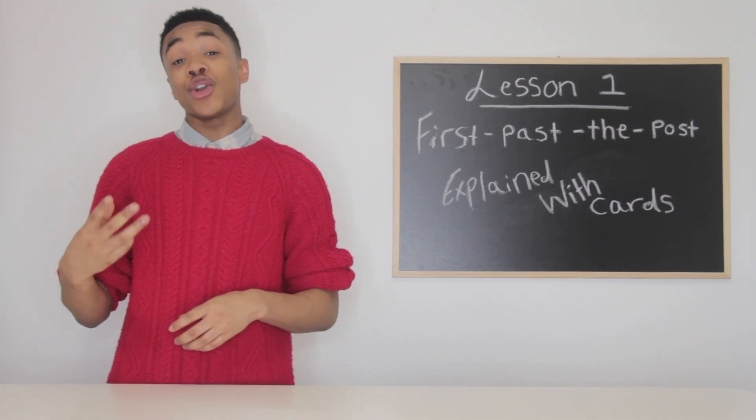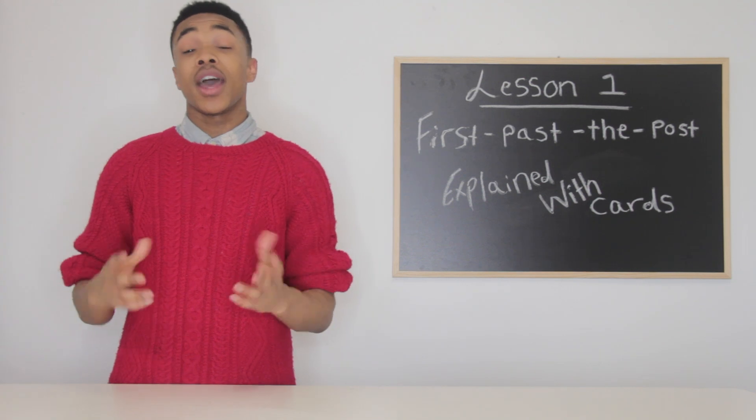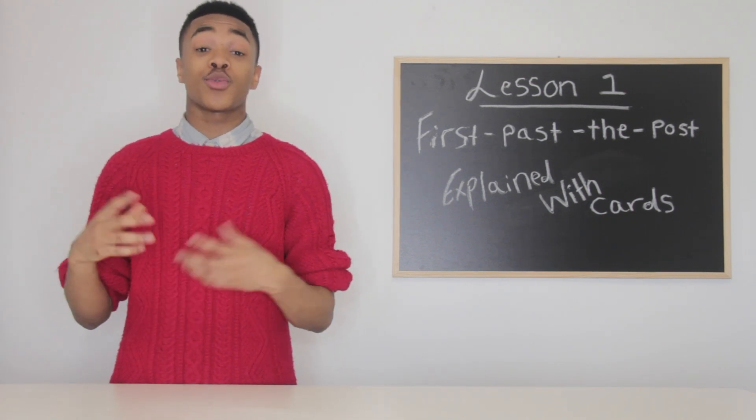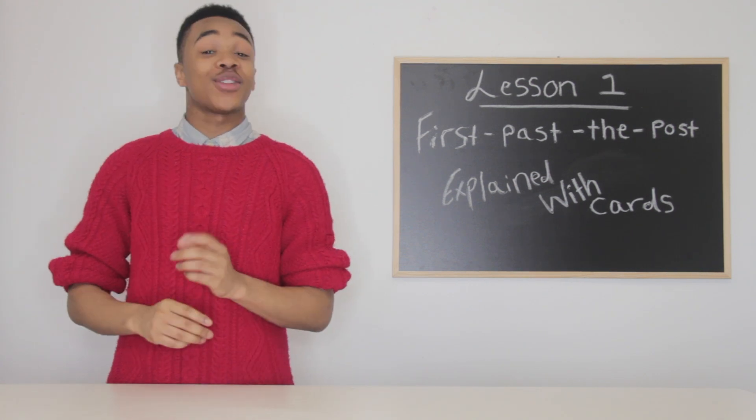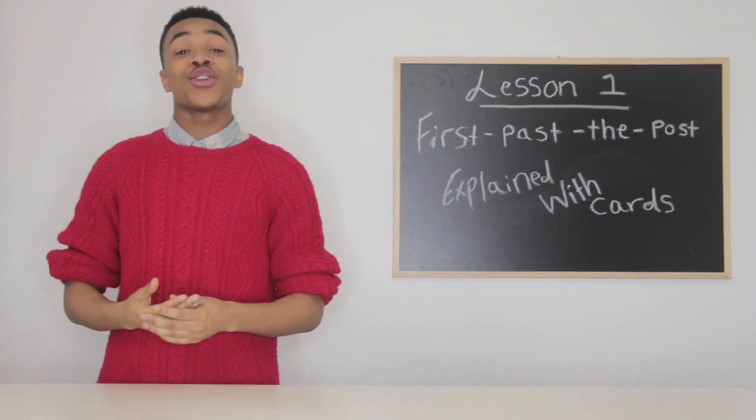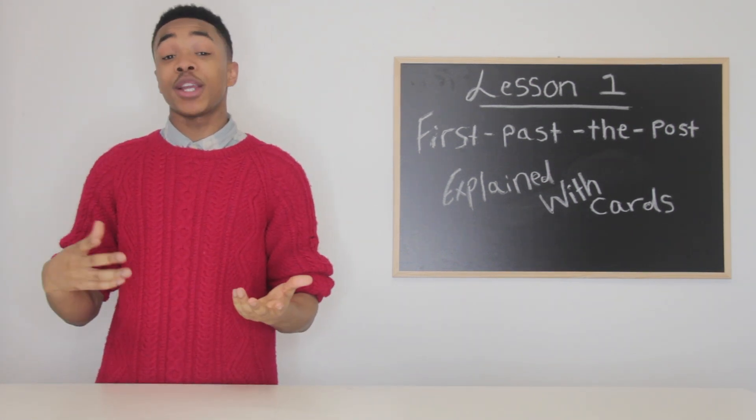There are three main voting systems that we use in the UK. The main one being first past the post, which we use to elect our government. And let me tell you something, I'm learning a lot about this today. So now I'm going to tell you how first past the post works and explain to you with a pack of cards.